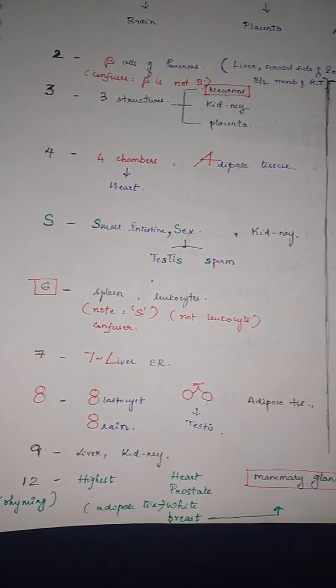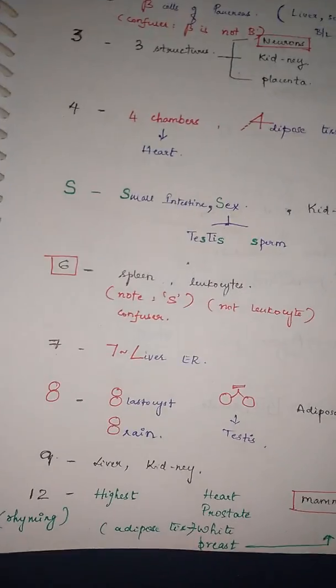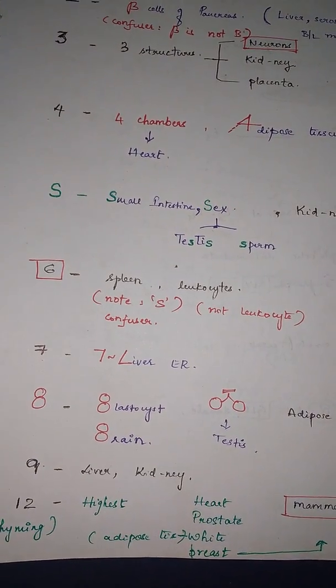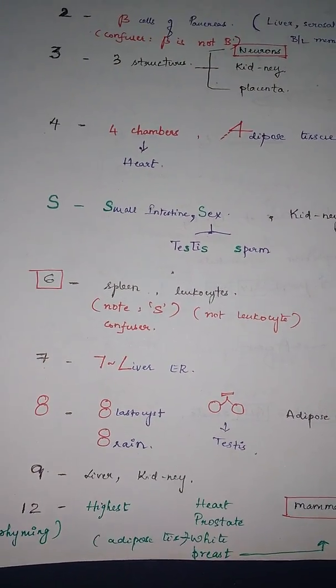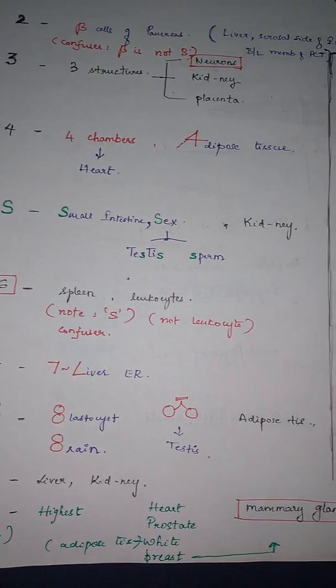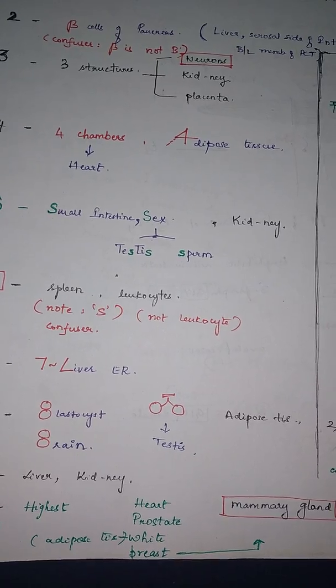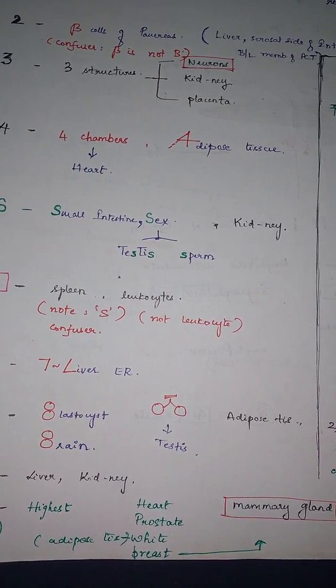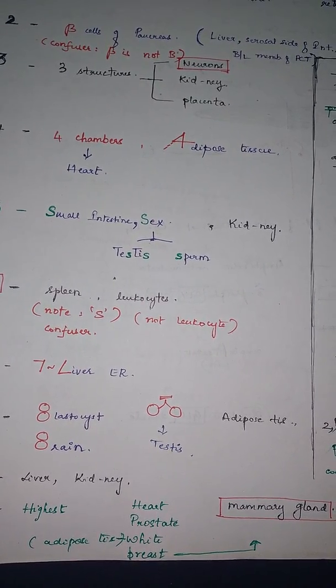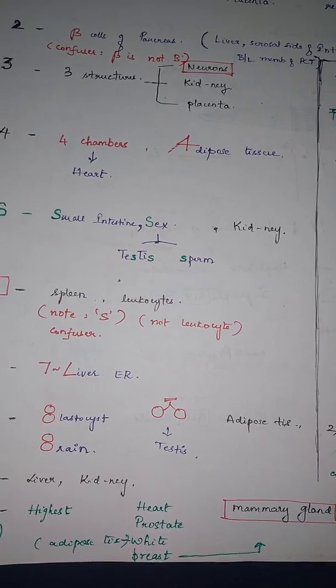And 12, we have to remember it with the rhyming words. Here, 12 is the highest number, and as you can see, they are heart, prostate, white, breast. White is white adipose tissue, breast is the mammary gland.